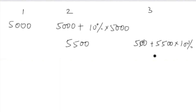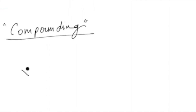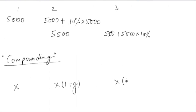When I say compounding, it is nothing but: if you have X amount today, it will become X into (1 + g) after one year, where g is the growth rate. It will become X into (1 + g) squared after two years, and X into (1 + g) cubed after three years.